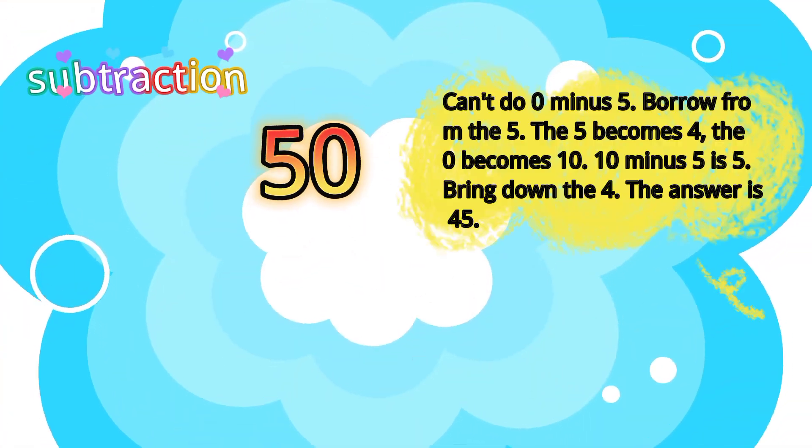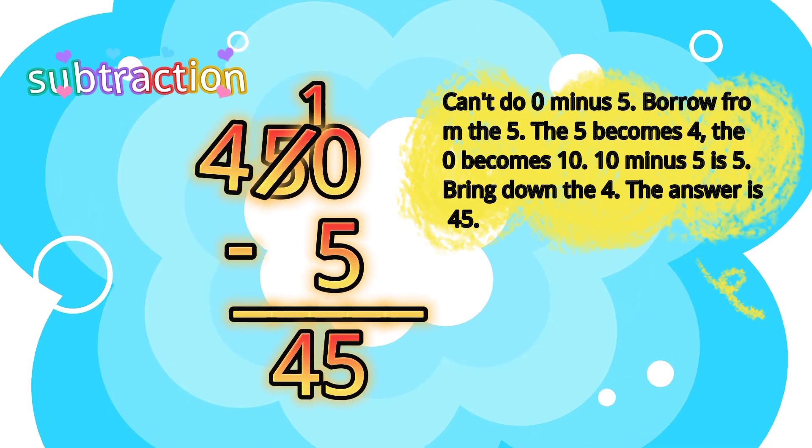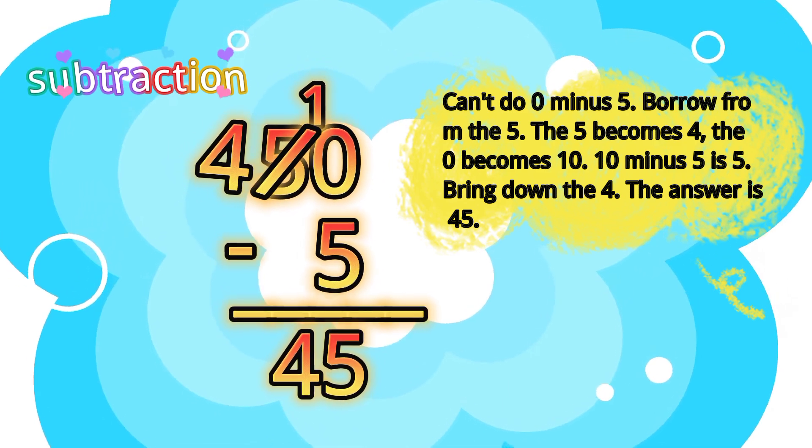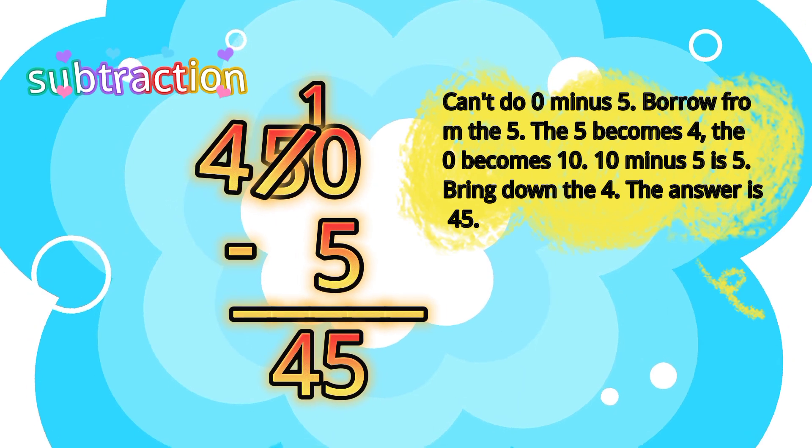Let's learn subtraction. 50 minus five. Can't do zero minus five. Borrow from five. The five becomes four, and zero becomes ten. Ten minus five is five. Bring down the four. The answer is forty-five.